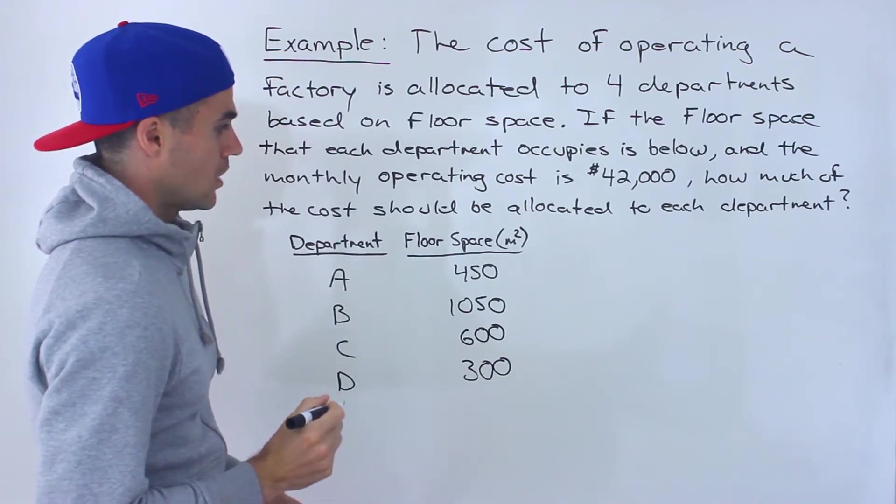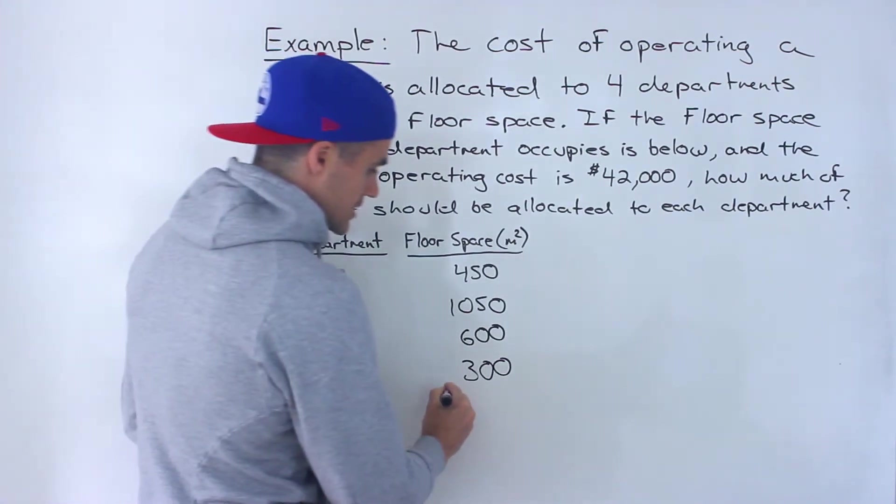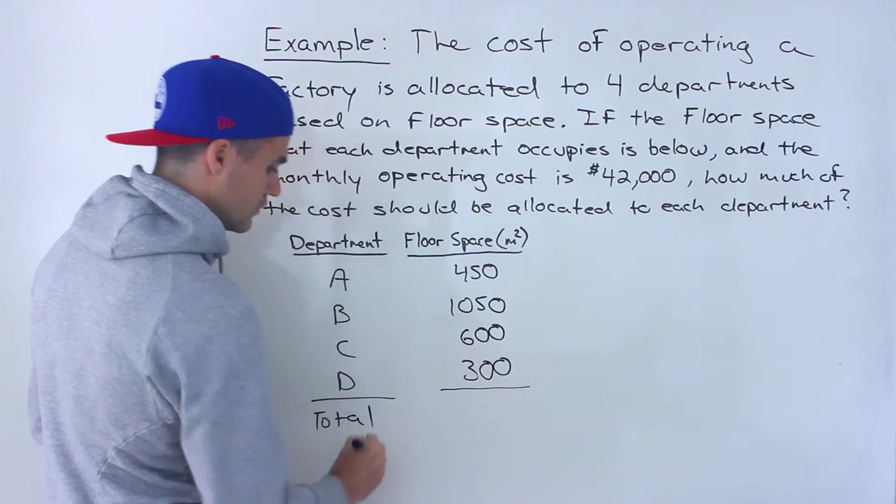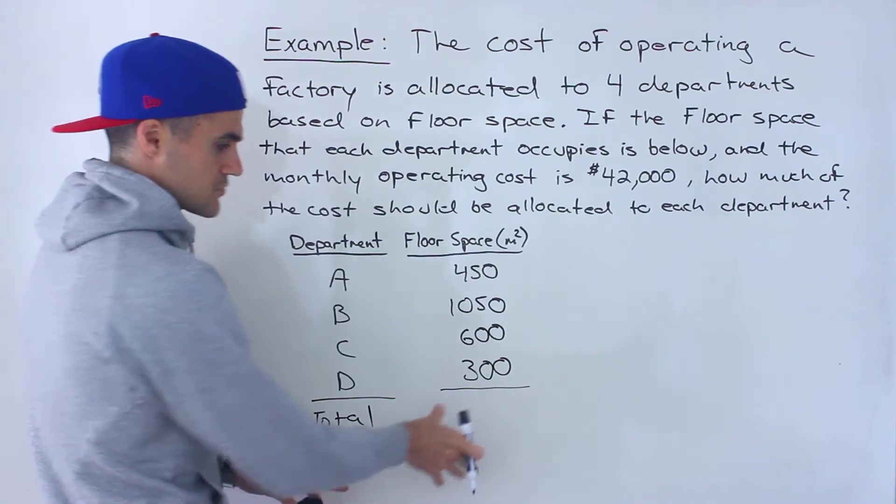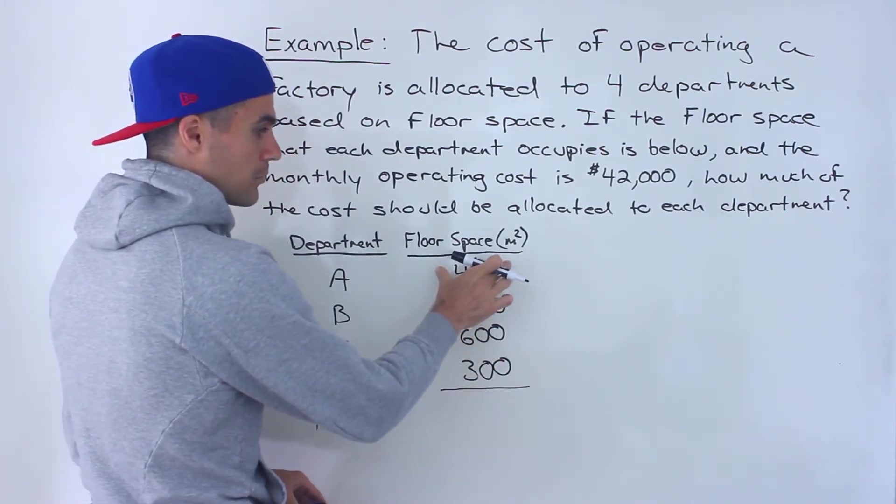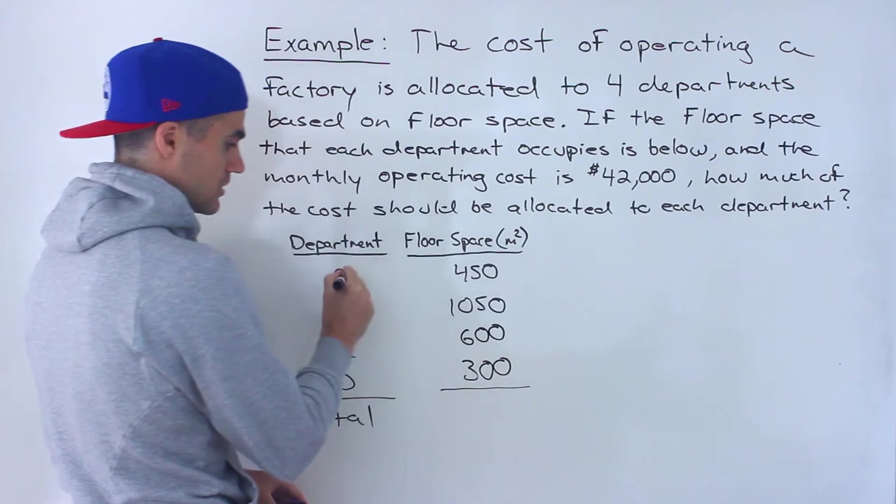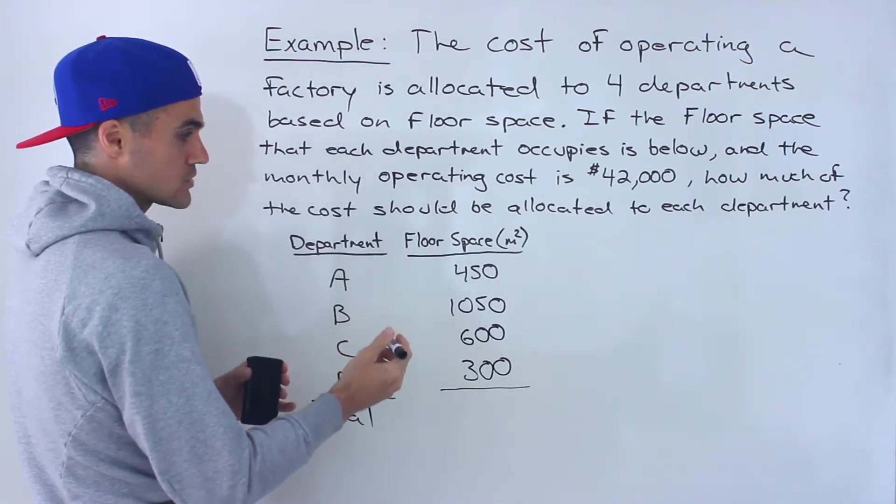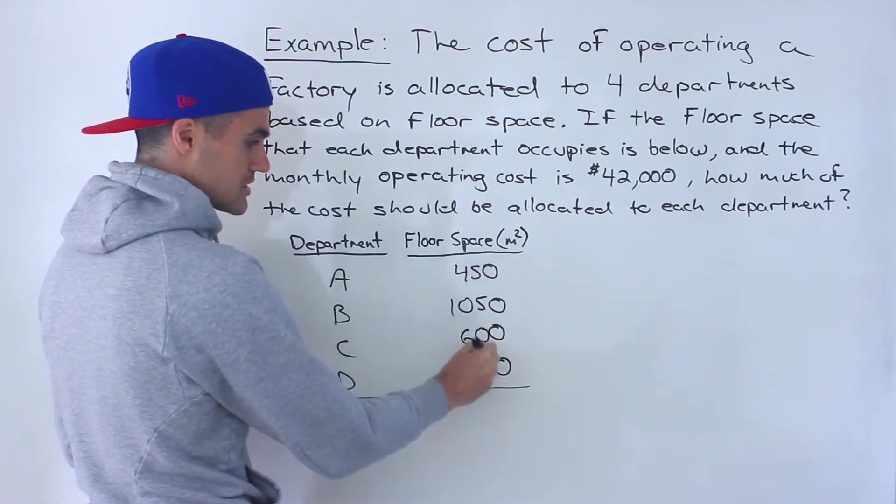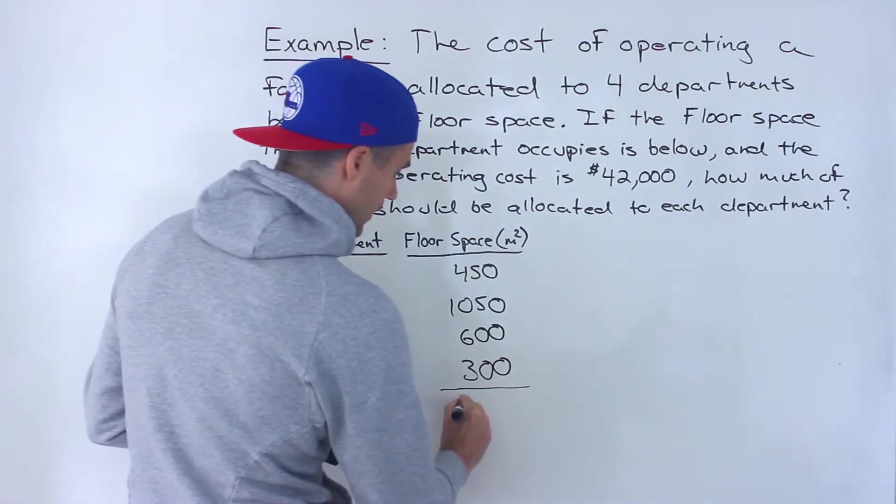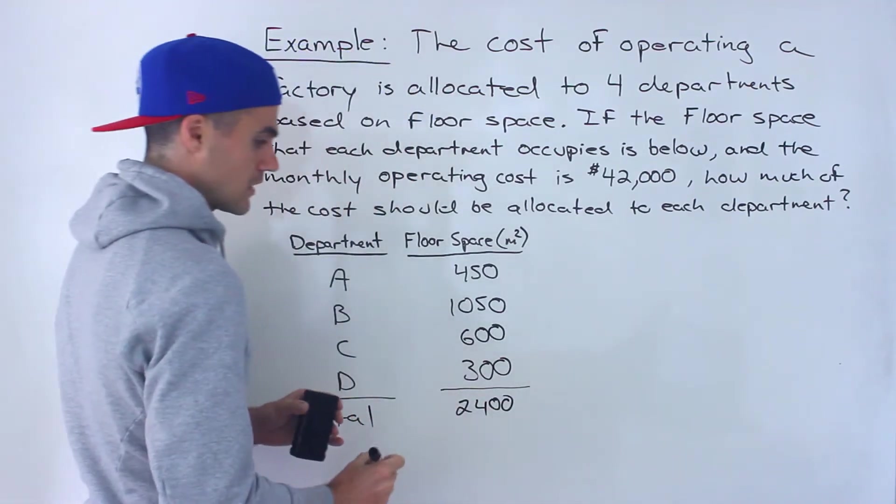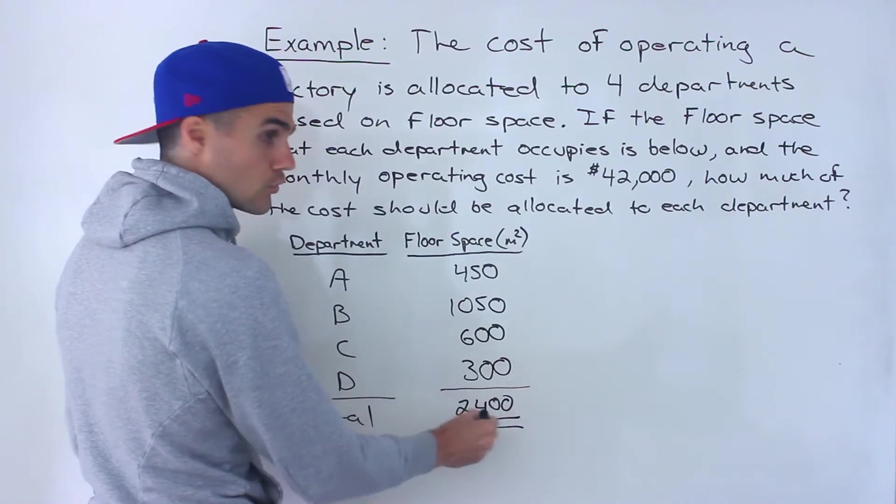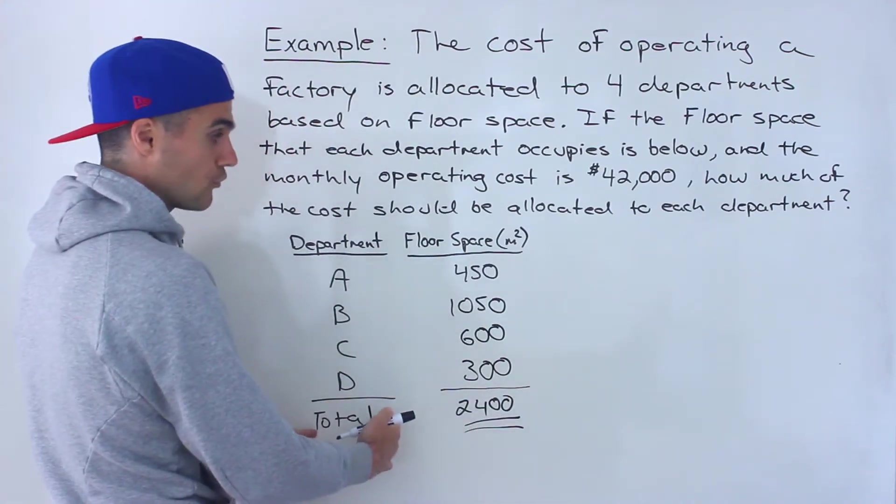So how can we do that? Well, let's first figure out what's the total floor space in the whole factory. Because once we have that total, then we can figure out what percentage or what's the fraction of floor space that each department is taking up of the whole factory. So notice if we take all these numbers and add them up, we would end up with 2,400 square meters. So that's what the total floor space is for the whole factory.